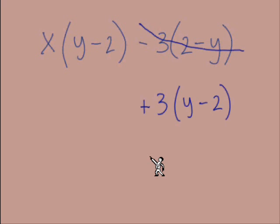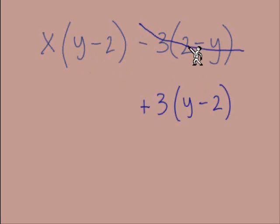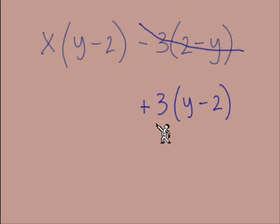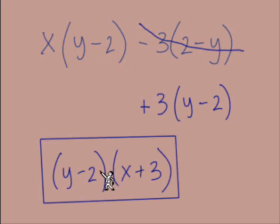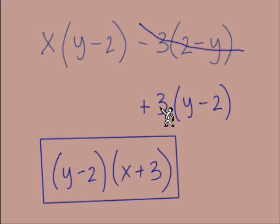To make the quantities in parentheses match up, we had to flip some signs because we had opposites. The (2 minus y) became (y minus 2) because our GCF was also flipped from negative 3 to positive 3. That matched up our quantities in parentheses, giving us (y minus 2) as the first factor. The second set of parentheses contains the leftovers: x from the first term, and negative 3 from the second term.